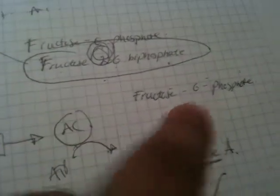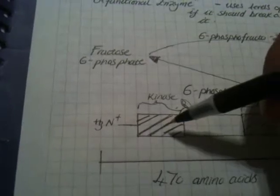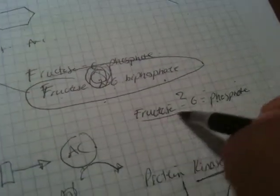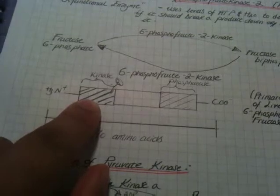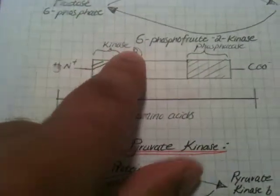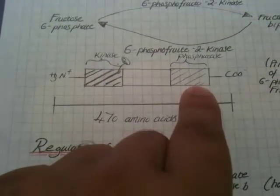But if you have something — like insulin — that removes the phosphate group from the kinase part, the kinase becomes active and the phosphatase becomes inactive. When the kinase is active, it phosphorylates fructose-6-phosphate to produce fructose-2,6-bisphosphate. When this molecule is produced, it activates PFK1. Therefore the full pathway can continue and glycolysis is active. Insulin causes dephosphorylation, the opposite of glucagon.